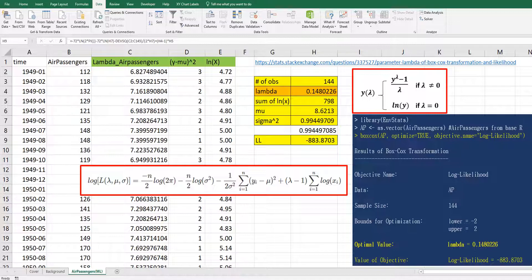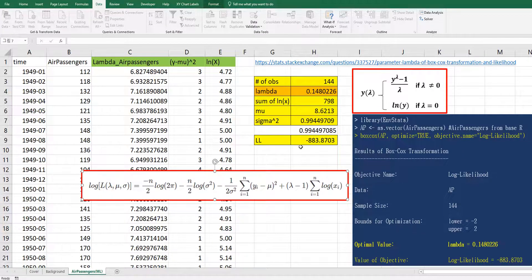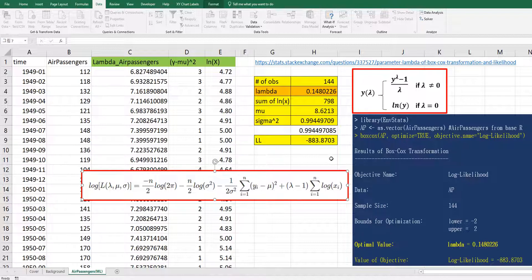As you can see, we were able to get same log likelihood and same lambda. So in Box-Cox transformation, if you want to find optimal lambda by using maximum likelihood, then you can use this formula and this approach. Then you can get optimal lambda like R output. I hope it was useful for you to understand how to find optimal lambda in Box-Cox transformation by maximum likelihood.